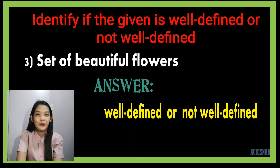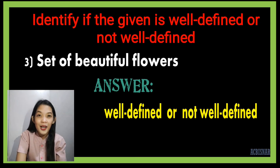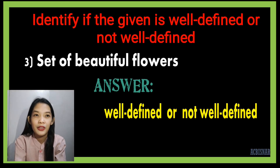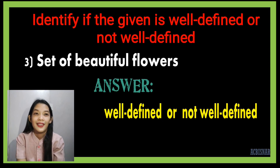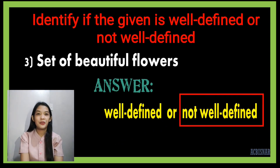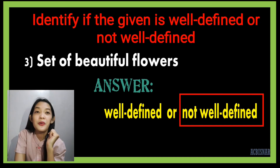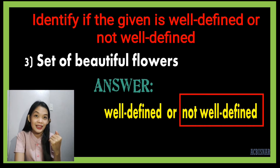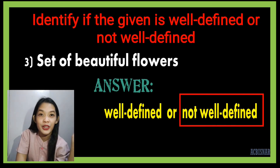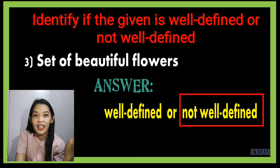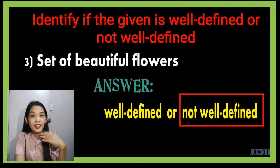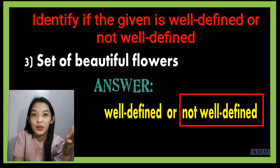Number three: set of beautiful flowers. The answer is not well-defined, because some flowers may be beautiful to you but not beautiful to me, since we have different preferences. For example, you like roses, I like lilies; you love sunflowers, but I love orchids. When you love something it is beautiful to you, so the elements would vary.